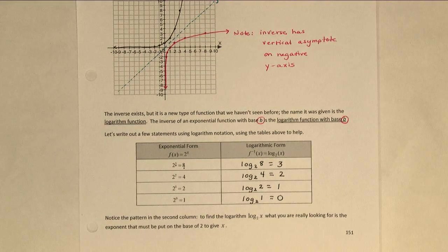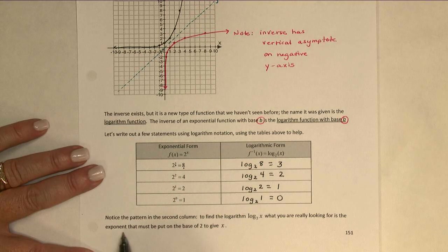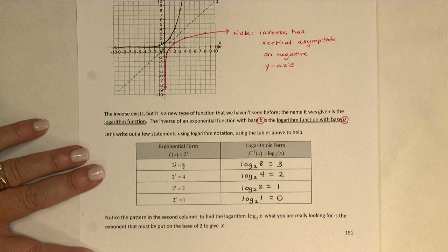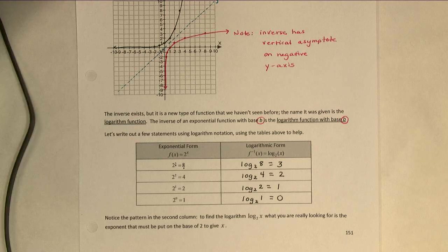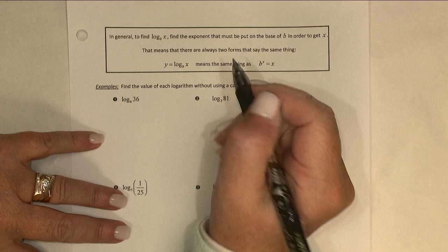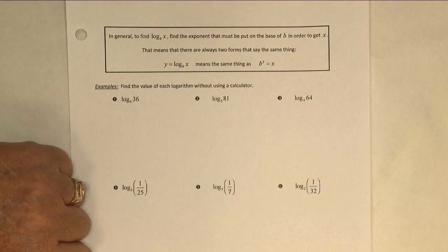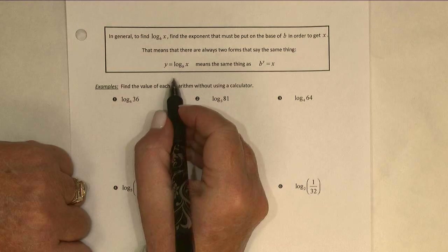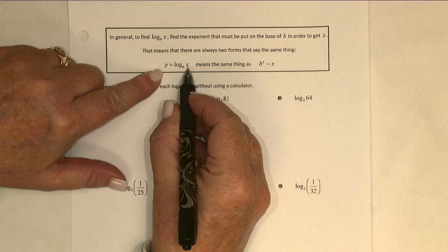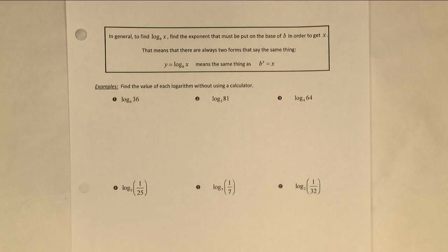So as the statement at the bottom of the page notes, to find the logarithm base 2 of x, what you're really looking for is the exponent that must be put on the base of 2 to give x. Keeping that in mind, we can go to a more general definition of logarithm for any base. In general, to find the log base b of x, our goal is to say what exponent has to be put on that base of b in order to get x. That means there are always two forms that say the same thing. y is the logarithm base b of x means the same thing as b to the y power equals x. These are just the function and the inverse forms of the same statement.